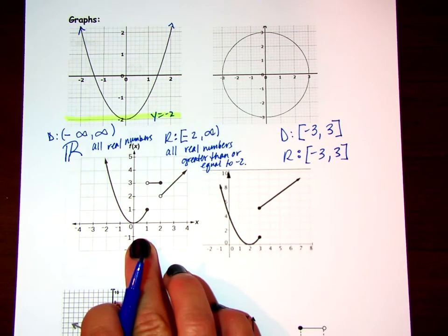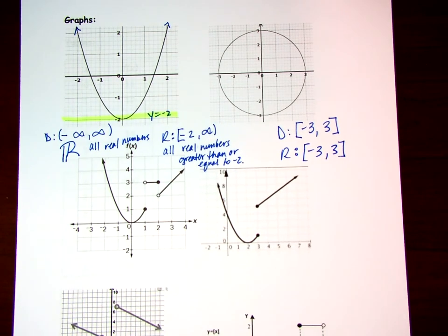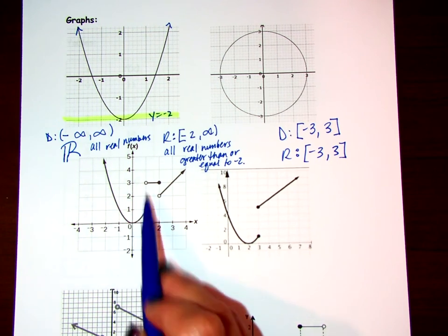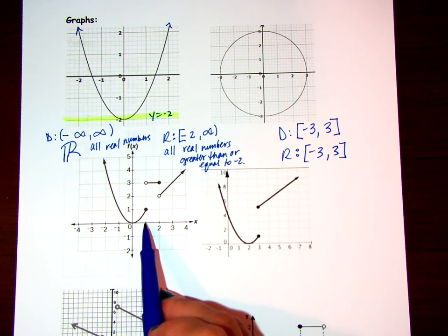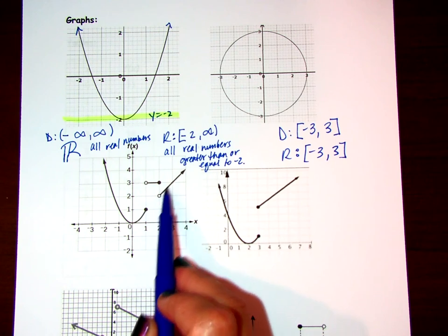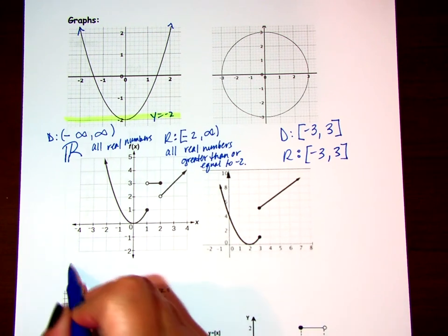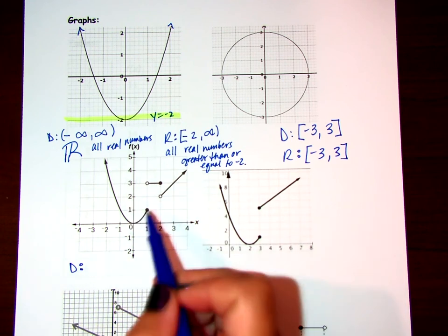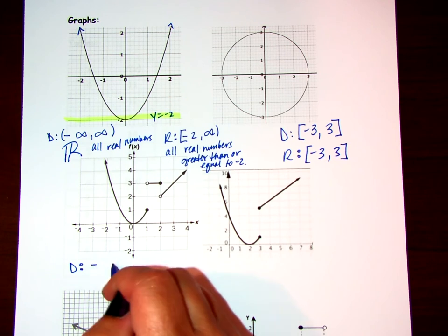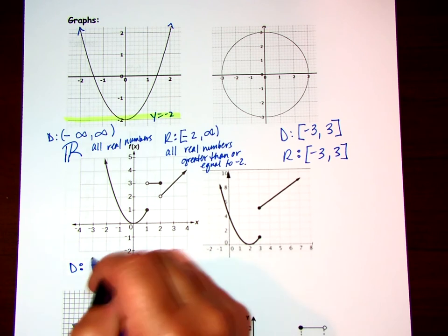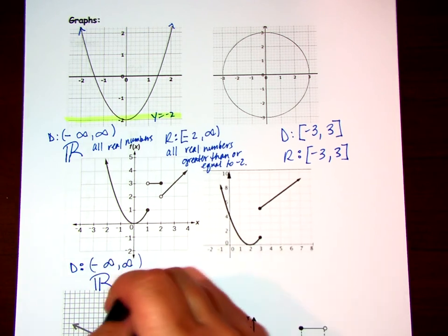This next one is a bit trickier. The domain starts at negative infinity and there's a section where it might seem like there's a break, but it picks right up where it left off and continues. There is actually still just one domain on this graph, even though there are some breaks and this is a piecewise function. So this domain goes from negative infinity to infinity, and we can also say all real numbers.